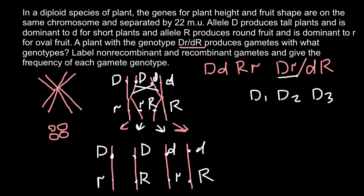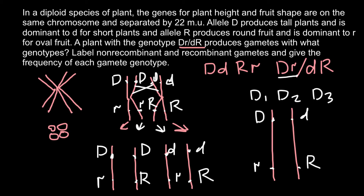If crossing over happens, let me zoom into this part of the picture. These are the non-sister chromatids. Here we have dominant allele D, here recessive allele d, recessive allele r, and dominant allele R. The greater the distance between two genes, the more frequently crossing over may happen, because it can occur in many places. But if the locus for gene R is close to gene D, crossing over frequency would be less.